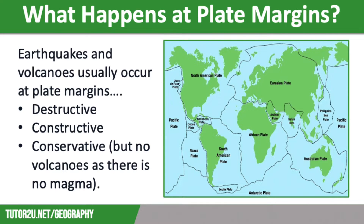We have constructive margins where the plates are moving away from each other. We have destructive margins where the plates are moving towards each other. And we have conservative margins where the plates are moving side by side.